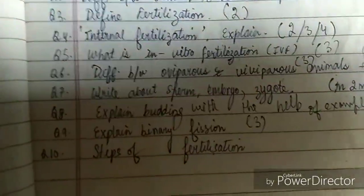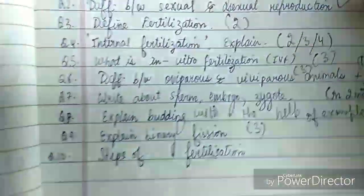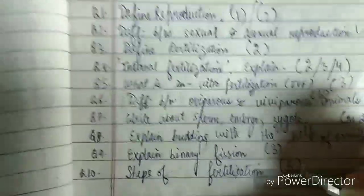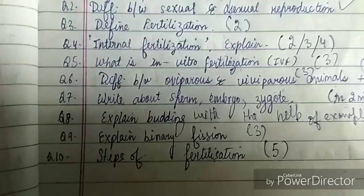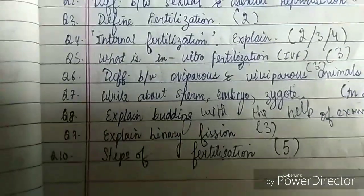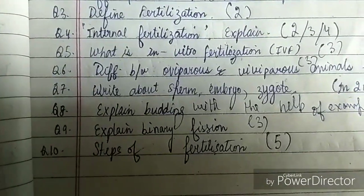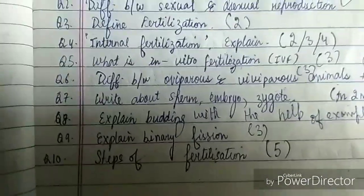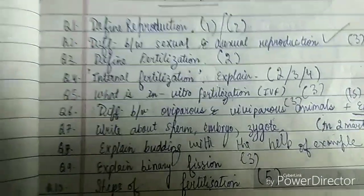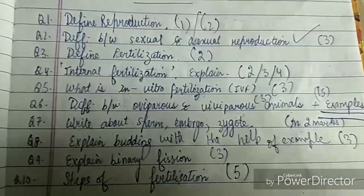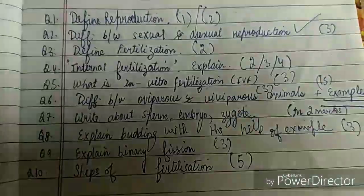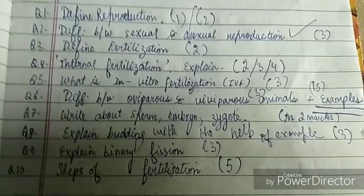The steps of fertilization is another important question for five marks. This is very important — the steps are extensive and you need to know them all, otherwise you would lose marks. These are the basic general things which are important from this chapter.